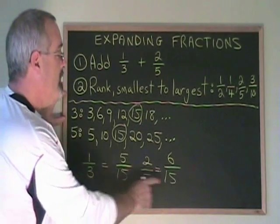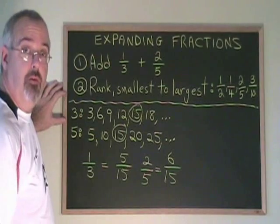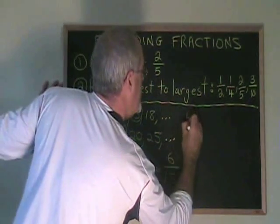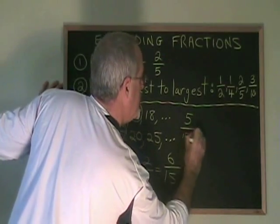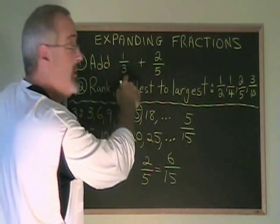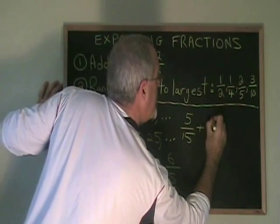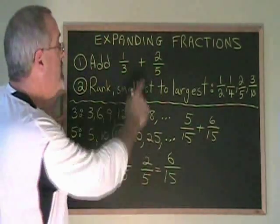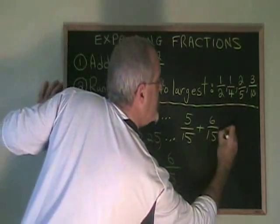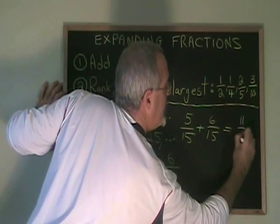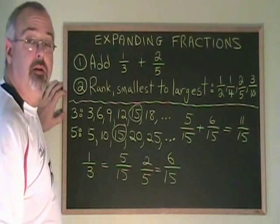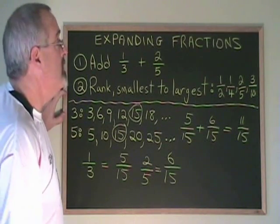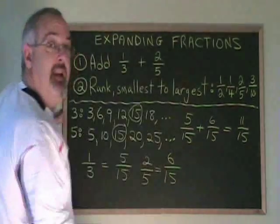Now that we know what our fractions are equal to when they are over the common denominator, we can finish adding them. 5/15, the expanded version of 1/3, plus 6/15, the expanded version of 2/5, is equal to 11/15. And we have our answer. This is one very useful way of using the skill of expanding fractions.